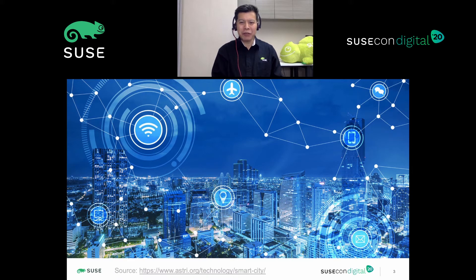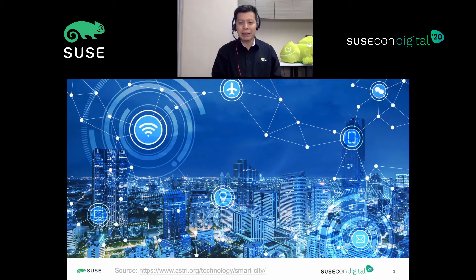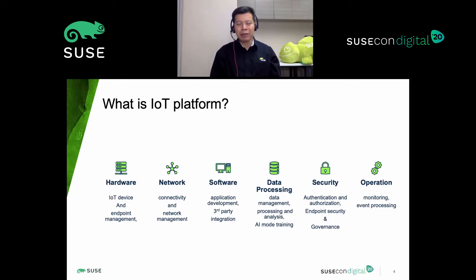Smart cities, smart homes, and smart offices are examples of IoT applications which improve the efficient use of our city infrastructure, home appliances, and office building facilities — to save more energy and to share data about weather or traffic conditions to make our lives easier and improve our well-being. The backbone behind all these applications is powered by an IoT platform.